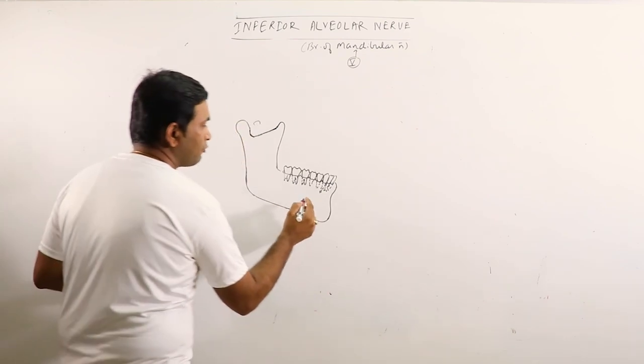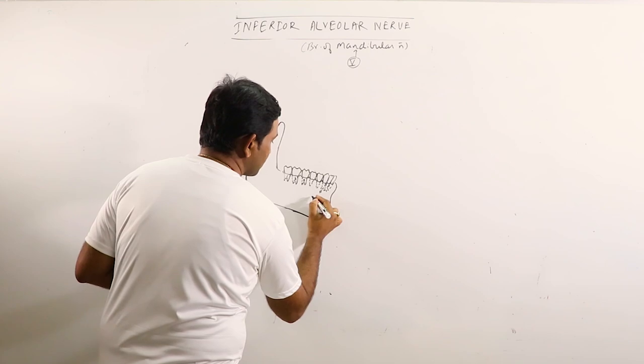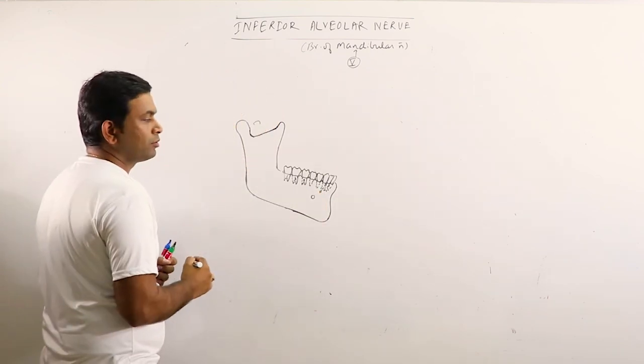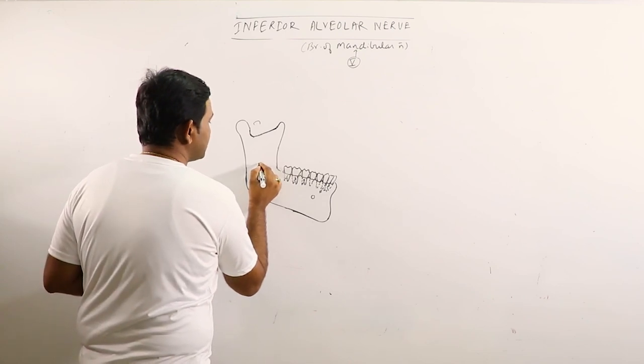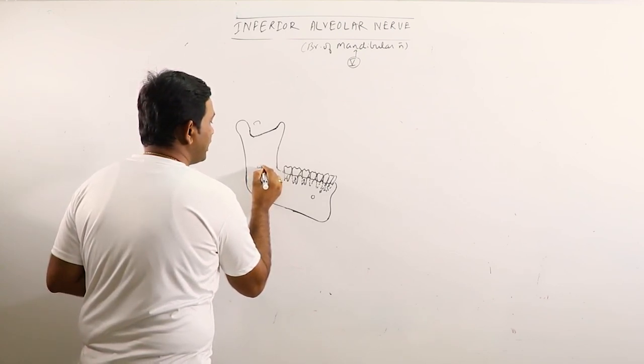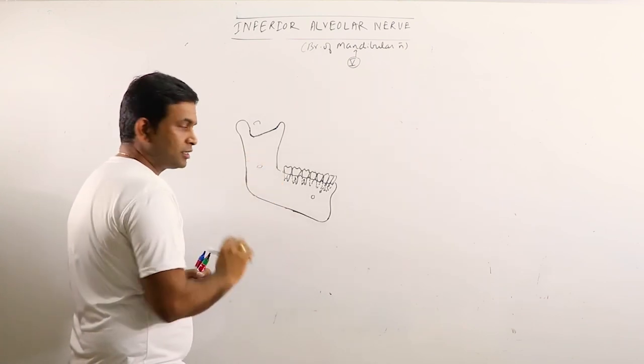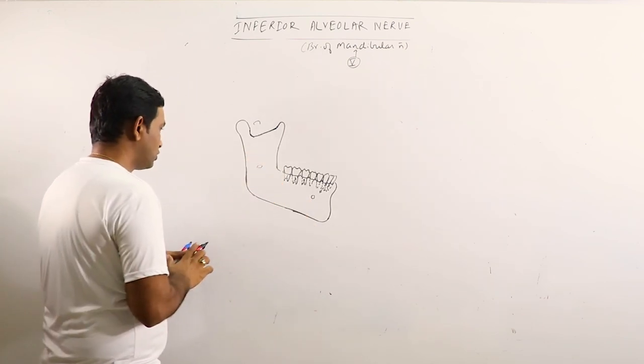So, this is the mental foramen and this is the mandibular foramen. This is on the inner surface and this is on the outer surface.